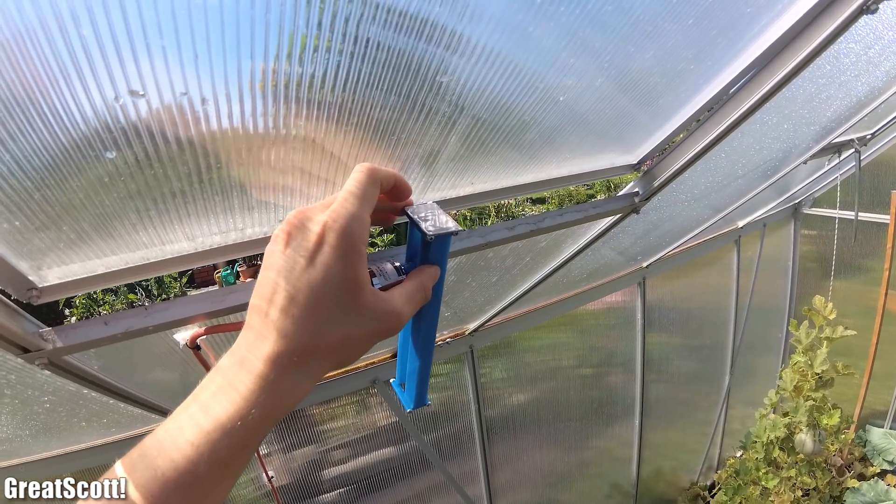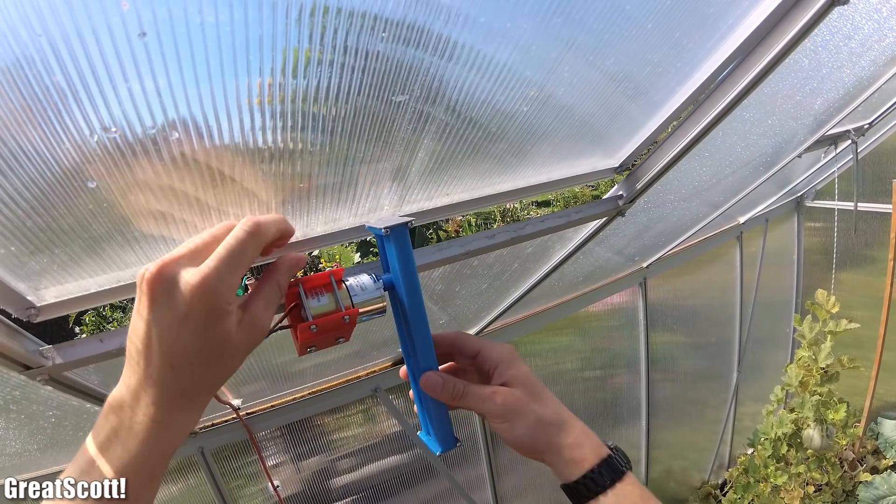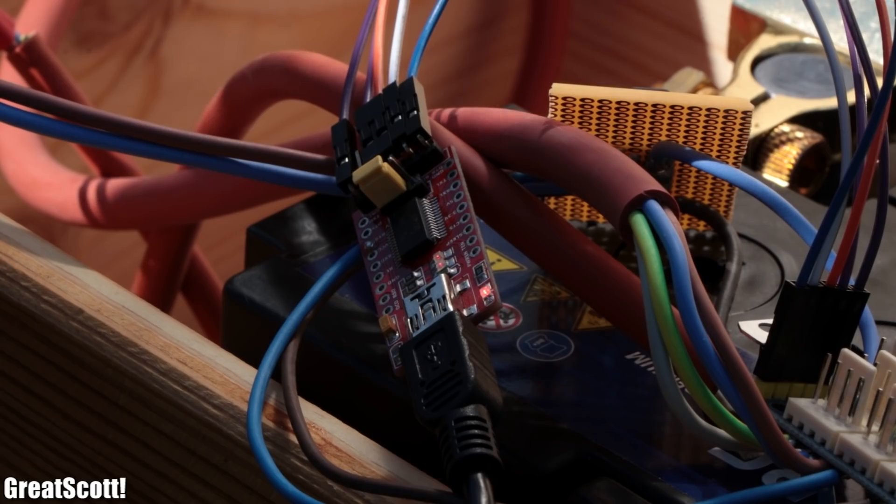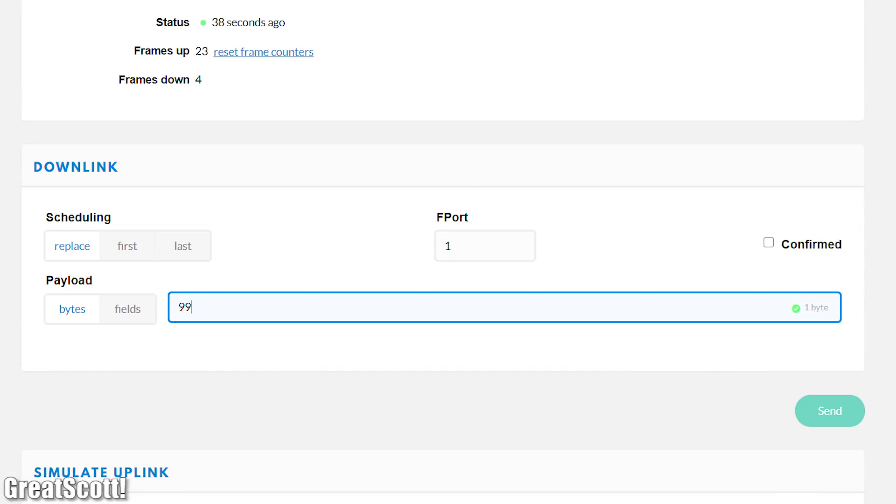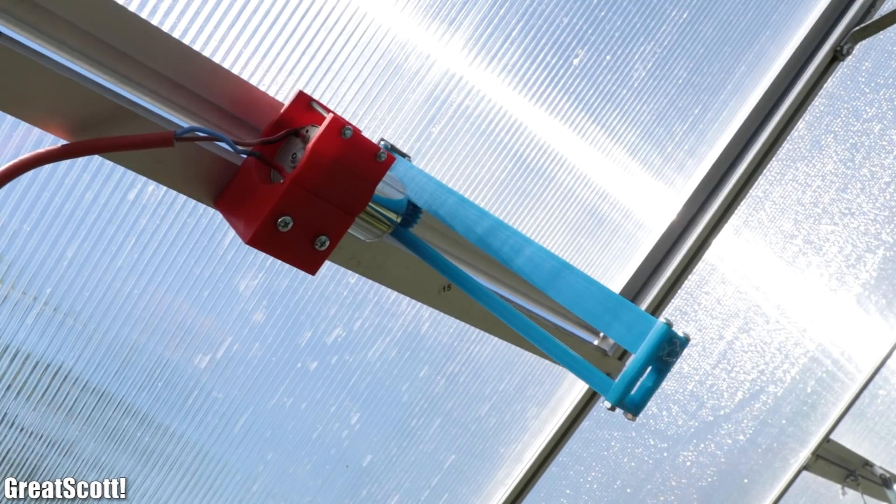After then using adhesive tape to mount the window opener to the window, I uploaded the finalized codes and as you can see the system still sends over the correct greenhouse data but now we can also remotely control the window through LoRa and the internet, brilliant.